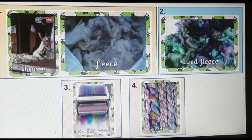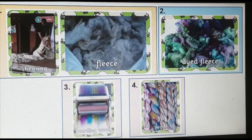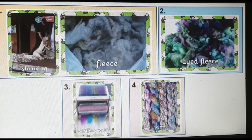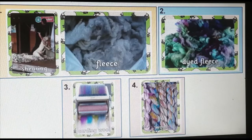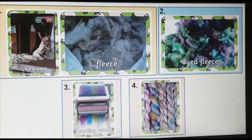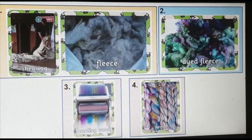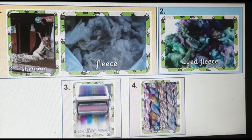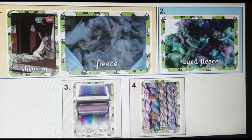Here comes the step-by-step process of how fleece is converted into wool. First, shearing — the farmer shears the fleece from the sheep. Second, the fleece is dyed into different colors. Finally, it is taken into the factory where machines give us carding wool. The fleece is manufactured and the product we obtain is carding wool. And finally, in the fourth step, we obtain the wool.